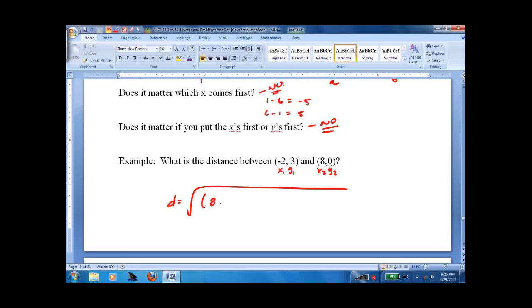This is x₁, y₁, x₂, y₂. Distance equals √[(8 − (−2))² + (0 − 3)²] = √[10² + (−3)²] = √[100 + 9] = √109, which does not reduce. That's it. Again, if you wanted to draw a triangle you could find 10 on one side and 3 on the other and do the Pythagorean theorem. Whatever works for you.